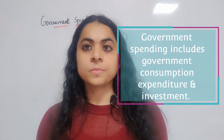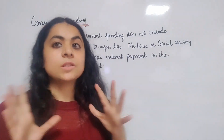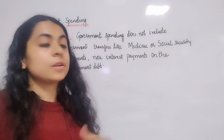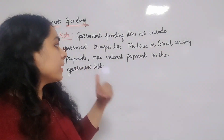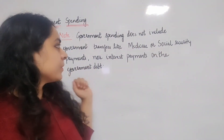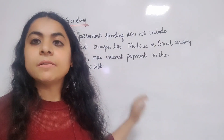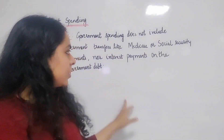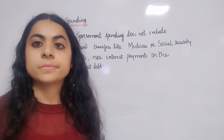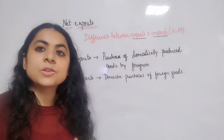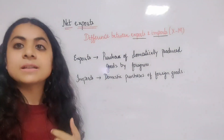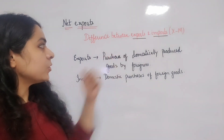Please note that government spending does not include government transfers like Medicare or Social Security payments, nor interest payments on the government debt. Although these are clearly government expenditures, they are not purchases of goods and services.